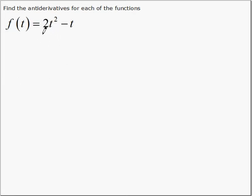The next example, finding the antiderivative of 2t squared minus t. Well, the antiderivative, then, is equal to—t squared had to come from t cubed.